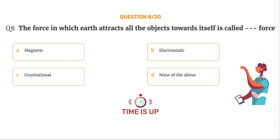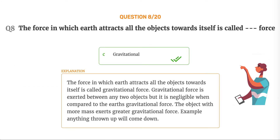The correct answer is Option C: Gravitational. The force in which earth attracts all the objects towards itself is called gravitational force. Gravitational force is exerted between any two objects but it is negligible when compared to the earth's gravitational force. The object with more mass exerts greater gravitational force. Example: anything thrown up will come down.